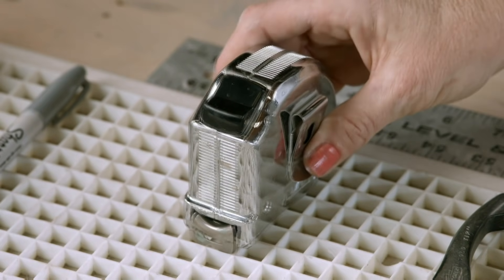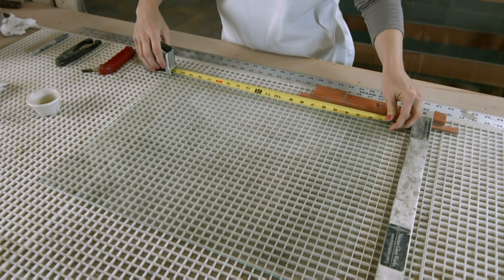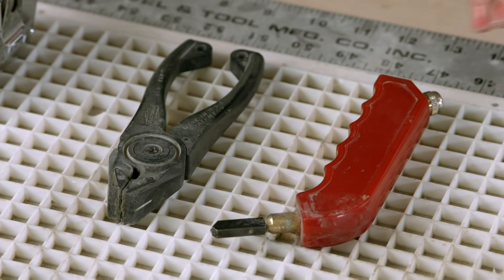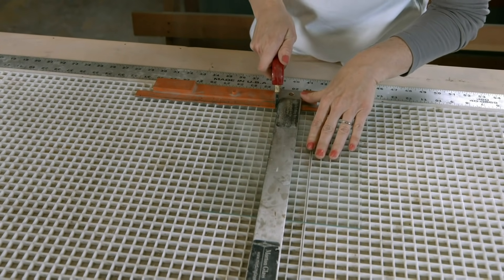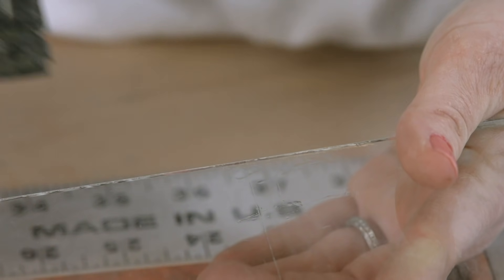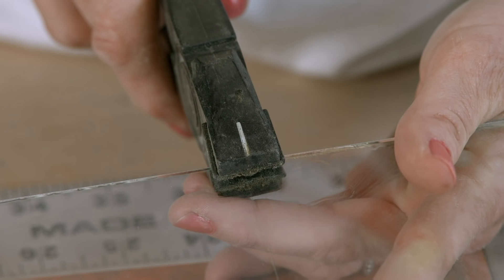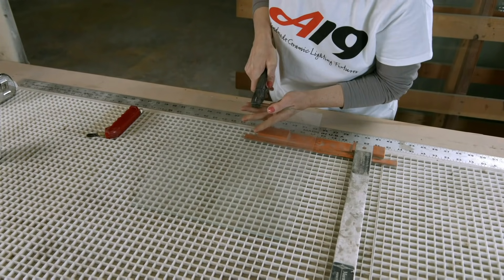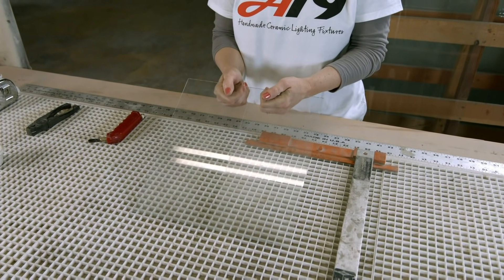The process starts with scrap glass from a window manufacturer. The glass is measured and scored with a cutting wheel. Using special pliers, pressure is applied to fracture the glass along the score line.